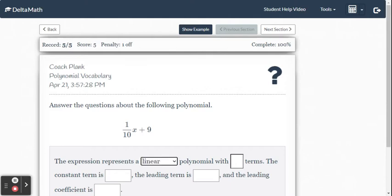So in this one, it's linear. It's x to the first. Polynomial with how many terms? This has two terms.